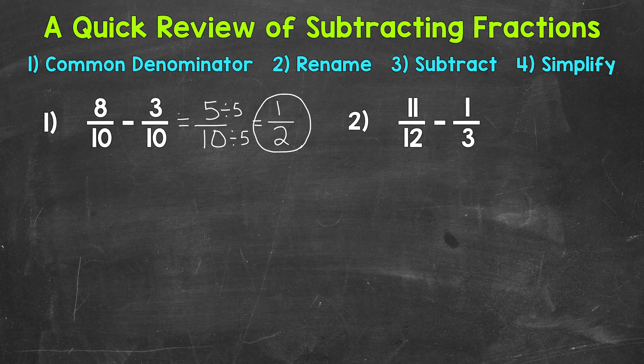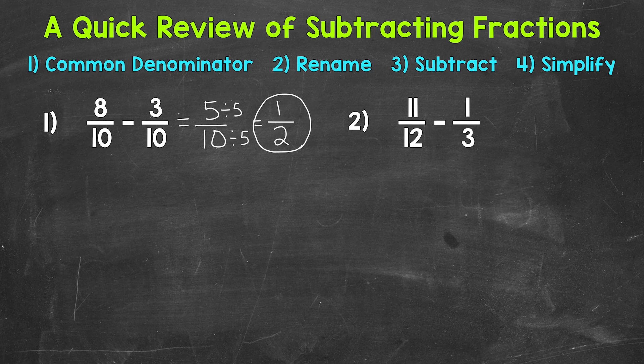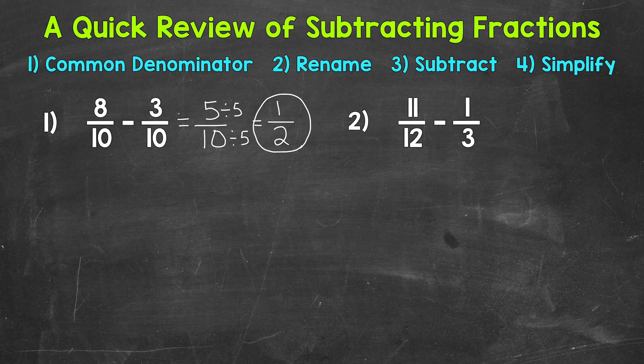Let's move on to number 2, where we have 11/12 minus 1/3. Now for this problem, we do not have a common denominator between our original fractions that we're subtracting. So we need to find a common denominator and then rename these fractions with that common denominator in order to subtract.